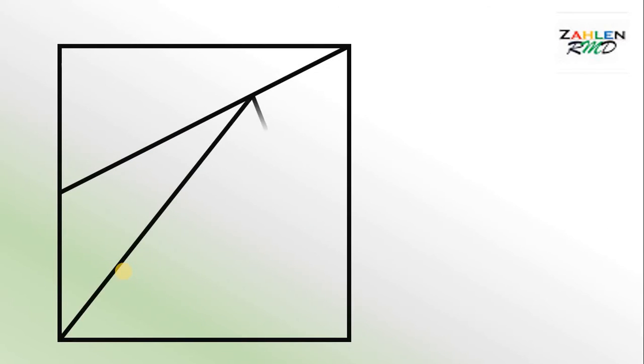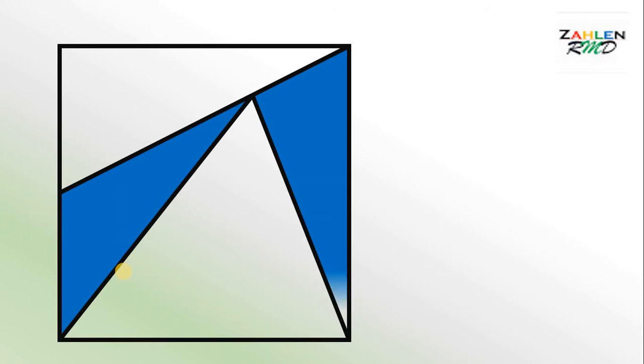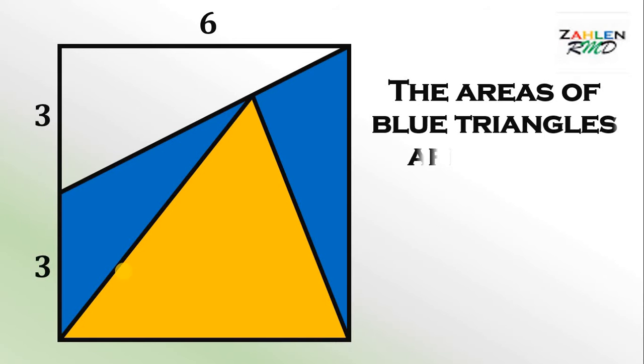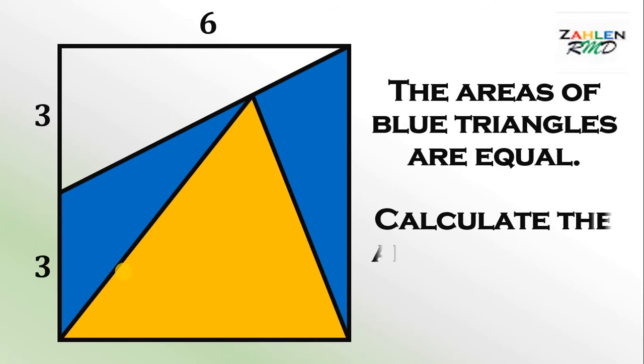Here's the question. The areas of blue triangles are equal. Calculate the area shaded in orange.